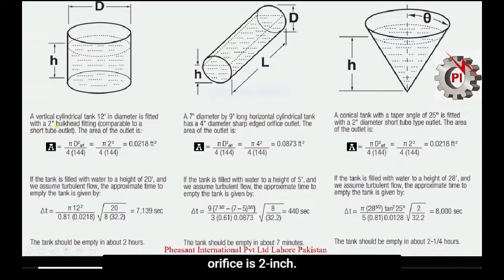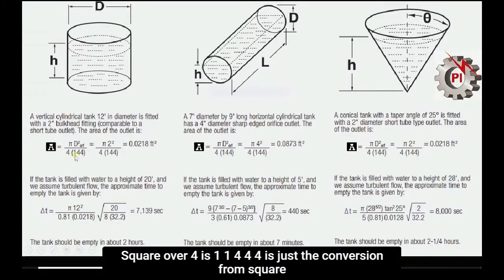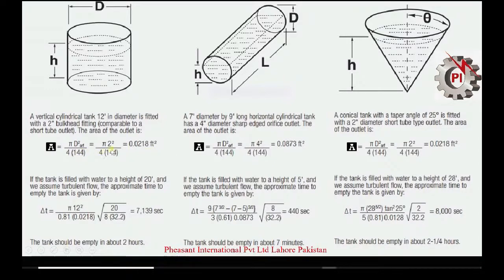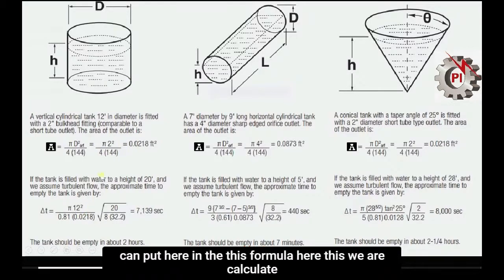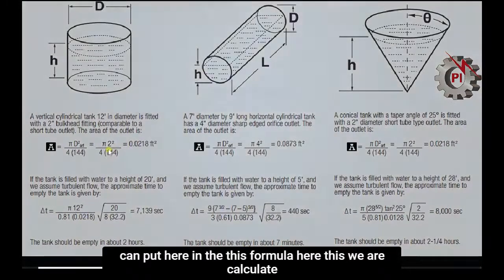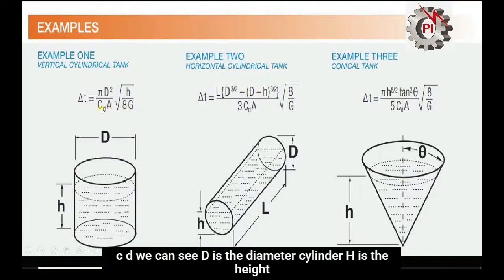First, we calculate the area of the small orifice. Since the orifice diameter is 2 inches, we use the formula A = pi * D squared / 4, dividing by 144 to convert from square inches to square feet. This gives us the orifice area A, which we will plug into the main formula.